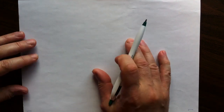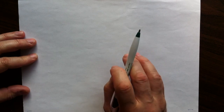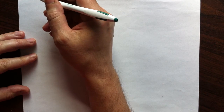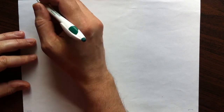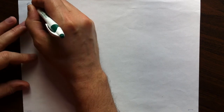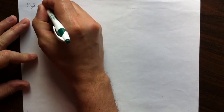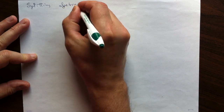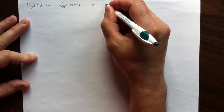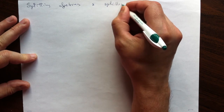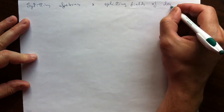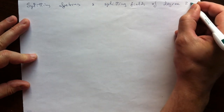Hello! Here I'll talk about examples of the construction of splitting algebra and splitting field. The examples will be for polynomials of small degree — degree 2 and degree 3. Splitting algebra and splitting fields of degree 2 and 3.